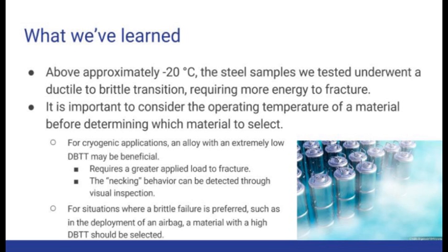In summary, after testing samples at a variety of temperatures, we discovered that both the 1018 and 1045 steel alloys experienced a ductile to brittle transition at a temperature of approximately negative 20 degrees Celsius. In theory, the 1045 alloys should have a higher DBTT than the 1018 due to the greater carbon content, but the curves were not smooth enough to make this distinction. A greater number of data points could be taken to more accurately determine the DBTT of each alloy of steel.